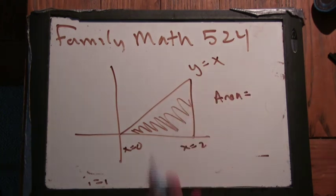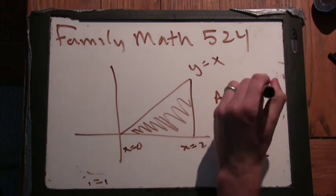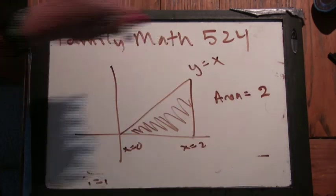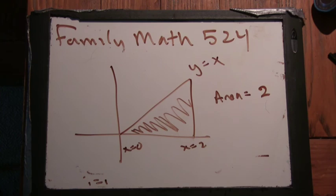It would be 2. Okay, how did you figure that out? Because this is a triangle, you go 2 over, 2 up. So b is 2, height 2. So 2 times 2 over 2 is 2. Okay, very nice. So I'm going to show you now how we might approach this problem in calculus.